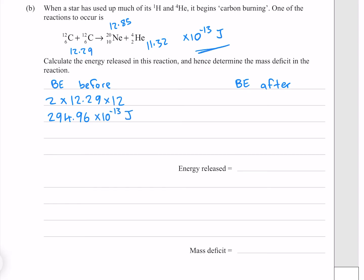For our binding energy after, our neon has a binding energy per nucleon of 12.85 and it has 20 nucleons. Our helium has a binding energy per nucleon of 11.32 and it has four nucleons, which gives me 302.28 times 10 to the minus 13 joules. Our change in energy is our energy released, which gives me 7.32 times 10 to the minus 13 joules.